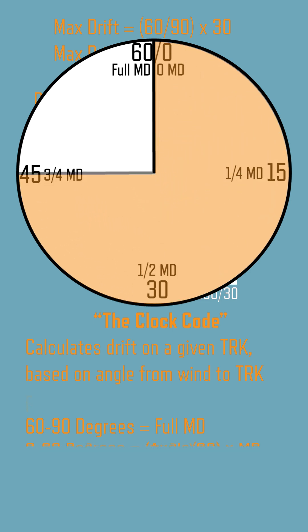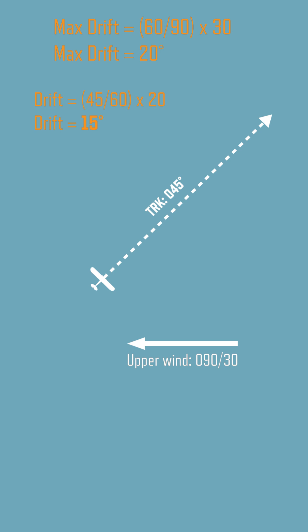Your heading is the track plus or minus the drift. Make sure you apply this into wind. Here, track 045 plus 15 degrees of drift makes a heading of 060 degrees. If you fly this heading, you will track 045.